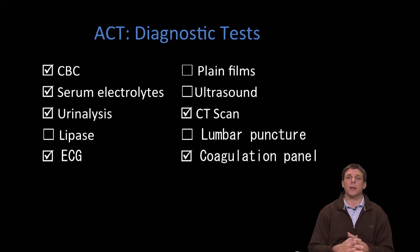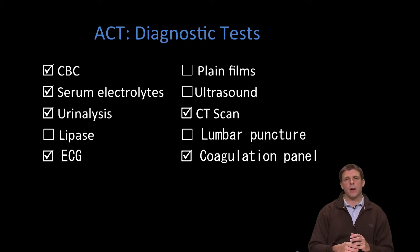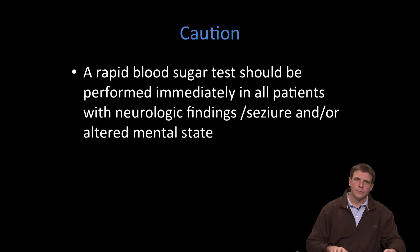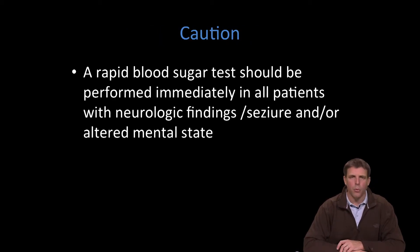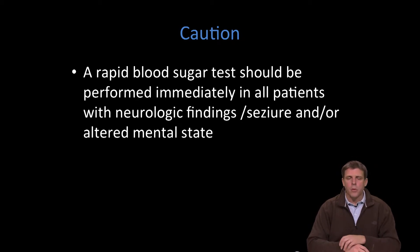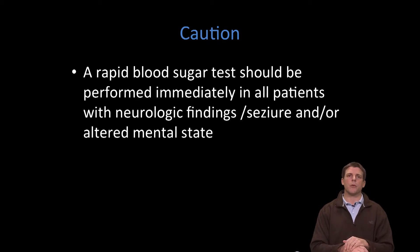A coagulation panel is very important if available, because if this patient is having a hemorrhagic stroke, it's critical to determine if there is a coagulation defect, or whether the patient may be taking a blood thinner unknown to family members. Additionally, a rapid blood sugar test should be performed immediately in all patients with neurologic findings, seizure, or altered mental state — this is an easily identified and fixed diagnosis that can be life-threatening if left to persist.